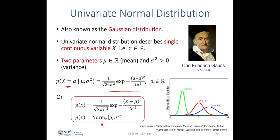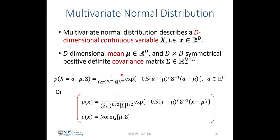The final distribution in this lecture is the multivariate normal distribution, where the random variable is a continuous random variable of D dimensions. It has a D-dimensional mean mu and a D-by-D symmetric positive definite covariance matrix sigma. The covariance matrix can take three different forms: spherical, diagonal, and full covariance matrix.